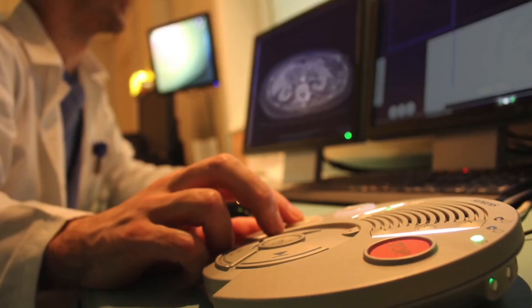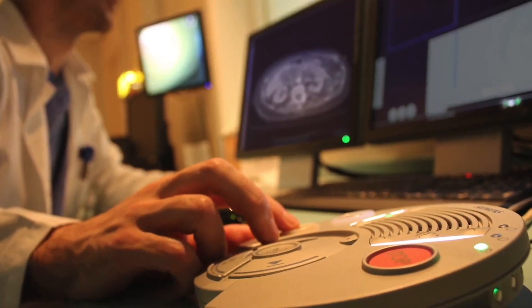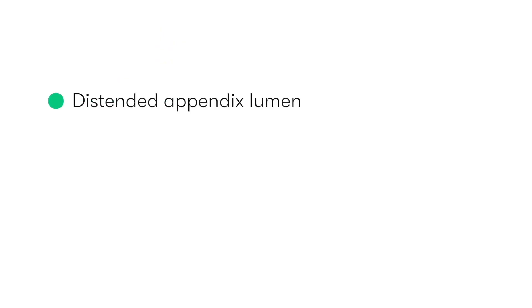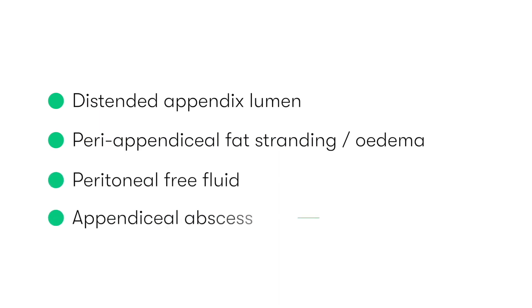The typical features we look for on CT include a distended appendix lumen, peri-appendiceal fat stranding or oedema, peritoneal free fluid, and an appendiceal abscess.